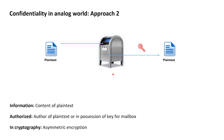Let's briefly talk about how mailboxes solve the limitation of the quadratic number of safes required. With mailboxes, each participant in a system where data should be exchanged confidentially now just needs to own a mailbox with a corresponding key that this participant keeps private. All in all, this means that only a number of mailboxes linear to the number of participants is required, which scales perfectly well even for a large number of participants.